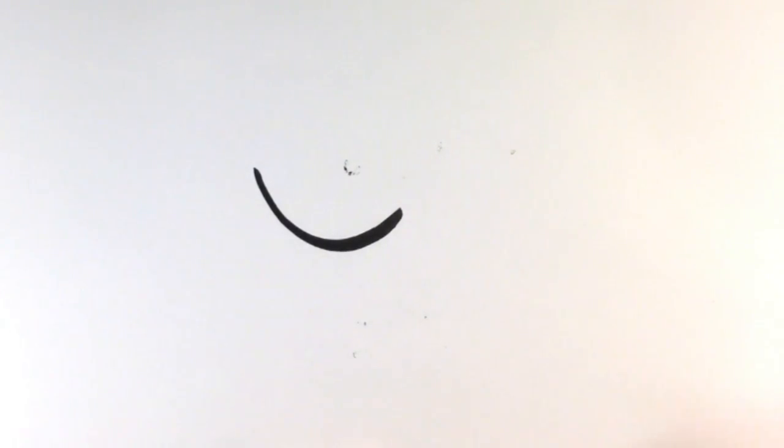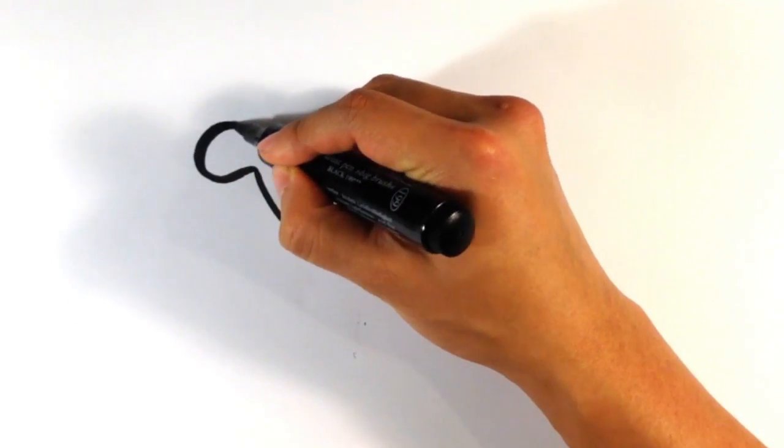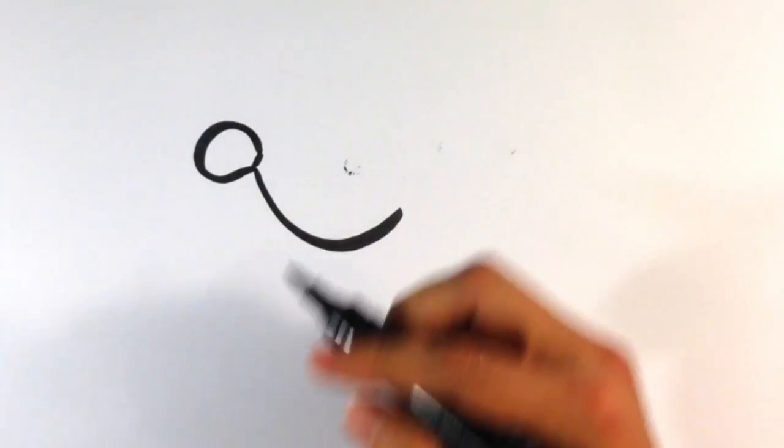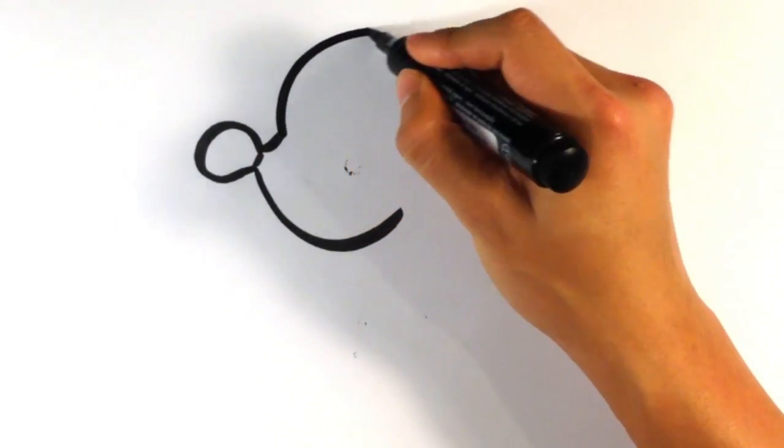The lower part of Rudolph's face. The nose. The upper part of his face here.